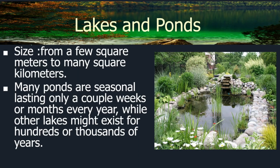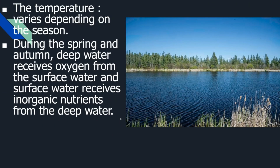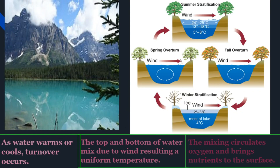Moving on to lakes and ponds. Unlike rivers and streams, lakes and ponds are non-flowing water. They can range from a few square meters to many square kilometers. Ponds generally last much less than lakes — they could be seasonal or temporary — while lakes can exist for millennia. The temperature varies depending upon the season, and there is a cycle we will look at more deeply in the next slide: summer stratification, fall overturn, winter stratification, and spring overturn.